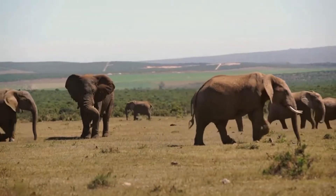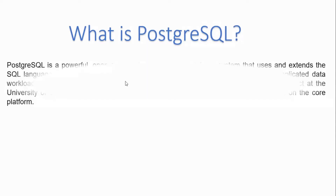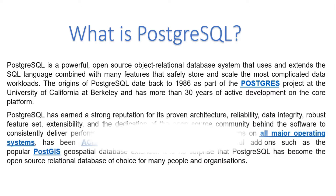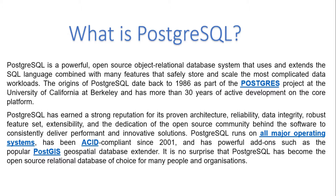So we can start by asking ourselves: what is PGSQL? Well, PGSQL is a powerful open source object-relational database system that uses and extends the SQL language combined with many features that safely store and scale the most complicated data workloads. The origins of PGSQL date back to 1986 as part of the PGSQL project at the University of California at Berkeley, and it has more than 30 years of active development on the core platform. There are many other details about PGSQL — you can browse their website and check for yourself.